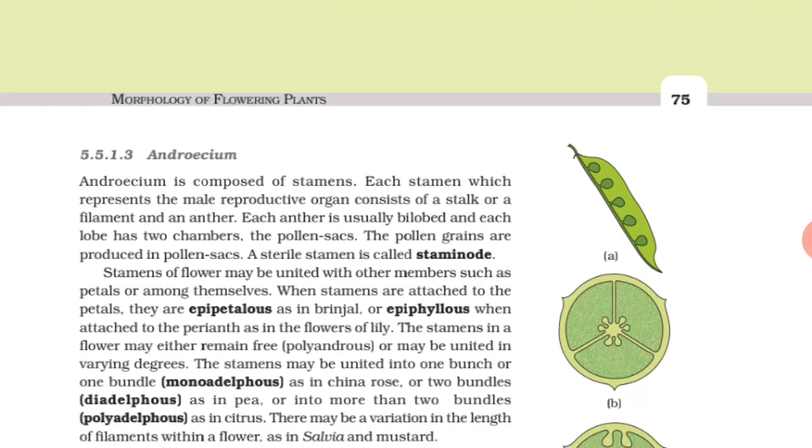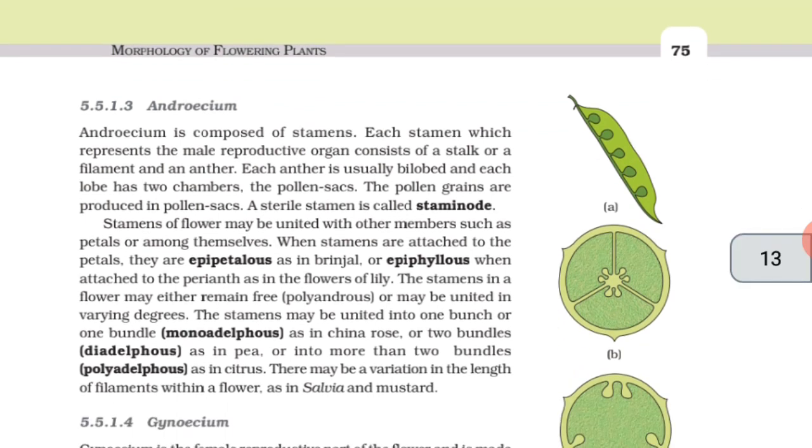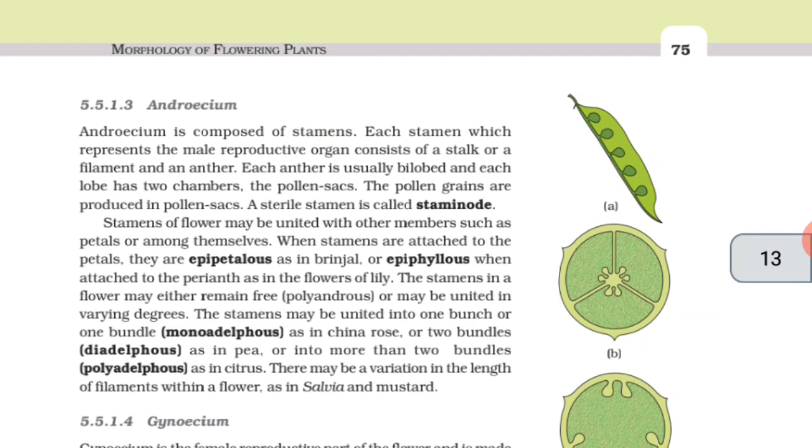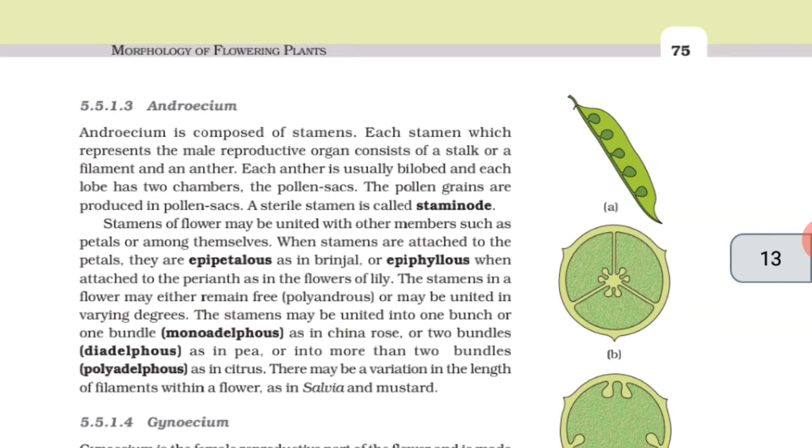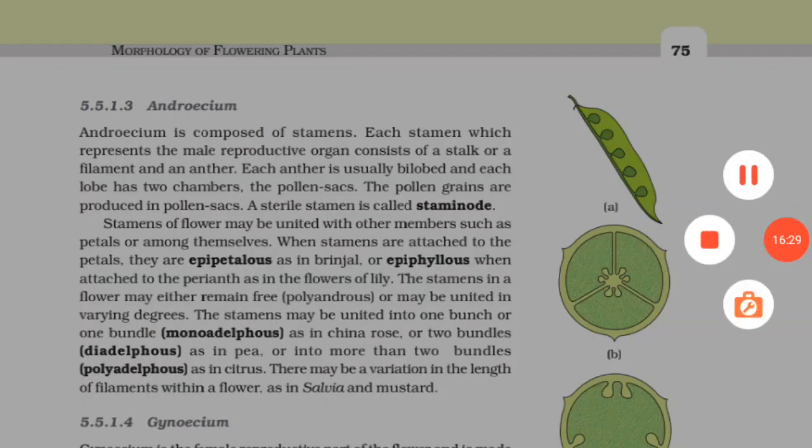Androecium. Androecium is composed of stamens. Each stamen which represents the male reproductive organ consists of a stalk or filament and an anther. Each anther is usually bilobed and each lobe has two chambers. The pollen grains are produced in pollen sacs. A sterile stamen is called staminode. Stamens of flower may be united with other members such as petals or among themselves. When stamens are attached to the petals, they are epipetalous as in brinjal or epiphyllous when attached to the perianth as in the flowers of lily. The stamens in the flower may either remain free, polyandrous, or may be united in varying degrees. The stamens may be united into one bunch or one bundle, monadelphous as in china rose, or two bundles, diadelphous as in pea, or into more than two bundles, polyadelphous as in citrus. There may be variation in the length of filaments within a flower as in salvia and mustard.